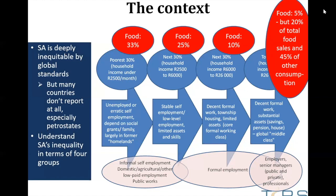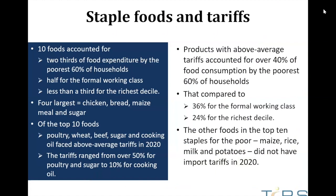What I was trying to do in this paper is look at the impact on the poorest 60% of households of these tariff measures. Ten foods accounted for two-thirds of food expenditure by the poorest 60%. The four largest were chicken, bread, maize meal, and sugar. Of those top 10 foods, poultry, wheat, beef, sugar, and cooking oil all had tariffs above the weighted average for South African tariffs in 2020 — ranging from over 50% for poultry and sugar to 10% for cooking oil. Those products accounted for over 40% of food consumption by the poorest 60% of households. The 60% of lowest income households were facing particularly high tariffs on their food — compared to 36% of consumption for the formal working class and 24% for the highest group. Maize, rice, milk, and potatoes did not have import tariffs since 2020, mostly because South Africa is essentially self-sufficient.